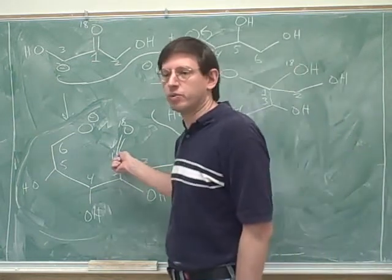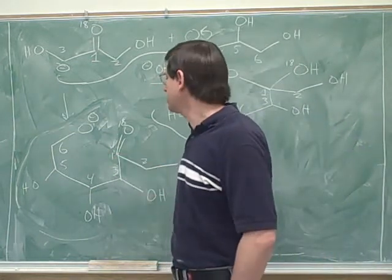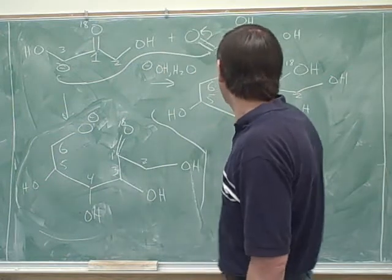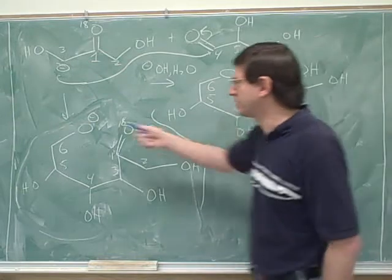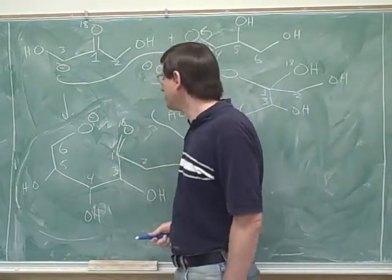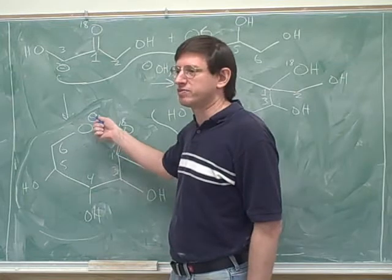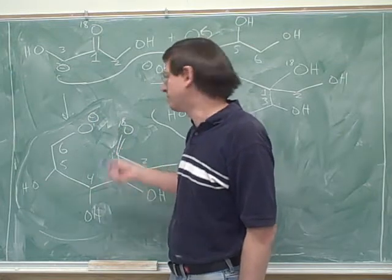Yeah, attack. Attack the number one carbon over here. How do we know we should do that? The main reason we know to do that is by looking at our product. We need to do that because we need this oxygen to be attached to the number one. So this will get the oxygen on the number one. You can only do things that are reasonable. Well, this is totally reasonable for a nucleophile to attack a carbonyl over here.